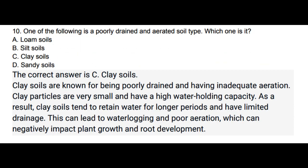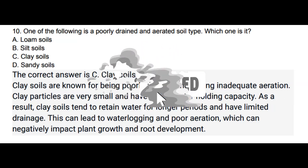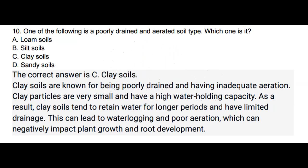Question 10: One of the following is a poorly drained and aerated soil type — which one is it? Options: a) Halzone soils, b) Silt soils, c) Clay soils, d) Sandy soils. The correct answer is c, Clay soils. Clay soils are known for being poorly drained and having inadequate aeration. Clay particles are very small and have a high water-holding capacity. As a result, clay soils tend to retain water for longer periods, have limited drainage, and can lead to waterlogging and poor aeration, which negatively impacts plant growth and root development.